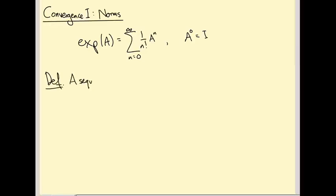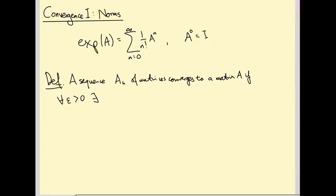A sequence A subscript k of matrices converges to a matrix A if — and the definition is going to look exactly like the definition of convergence you're used to — for all epsilon positive, there exists an N such that the norm of A_k minus A is less than epsilon whenever k is bigger than N. The only difficulty is in understanding what is meant by the size of a matrix. If these were just numbers, this would be the absolute value of A_k minus A, but because we're working with matrices, absolute value doesn't make sense. We use double vertical bars and call it the norm of A_k minus A.